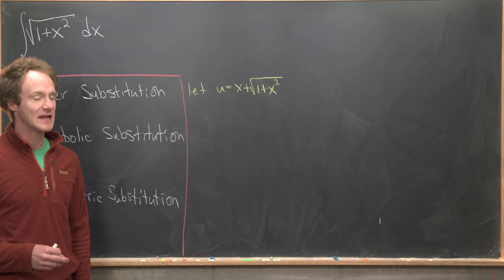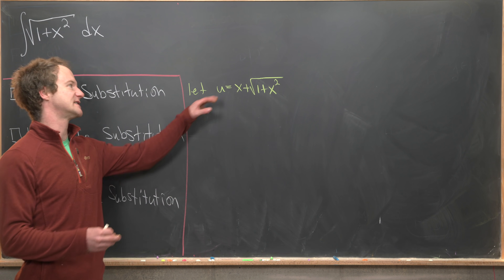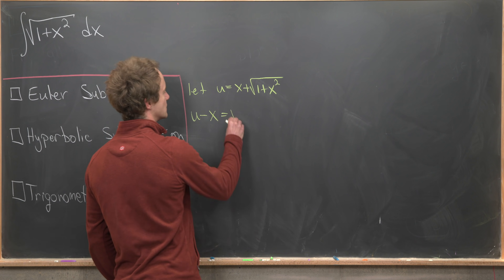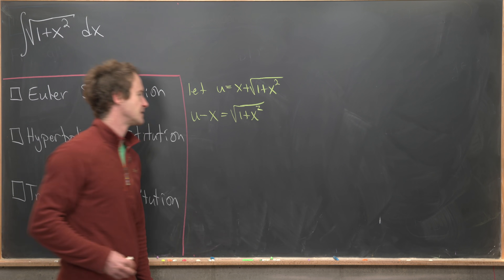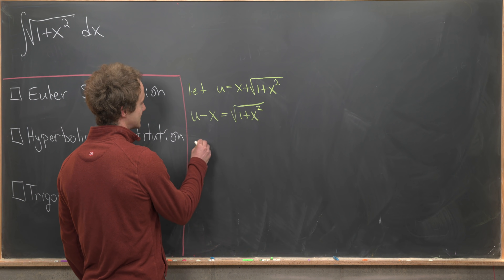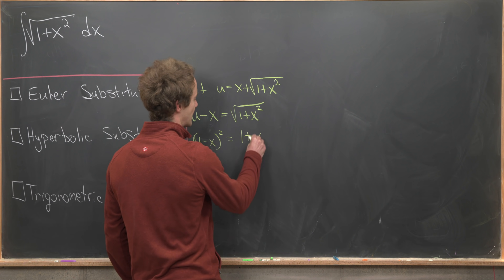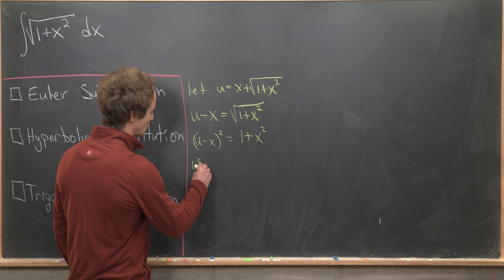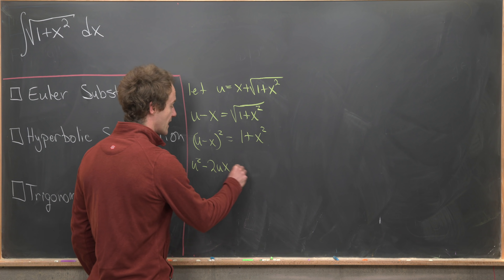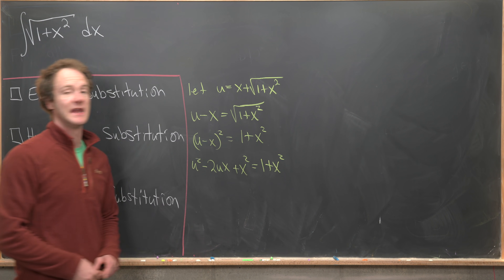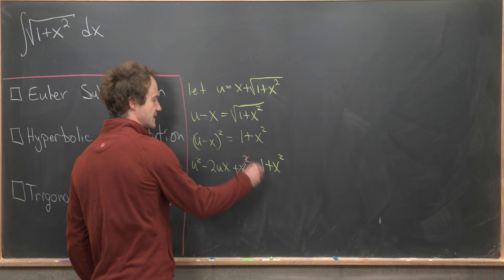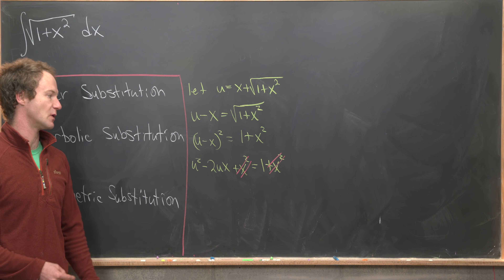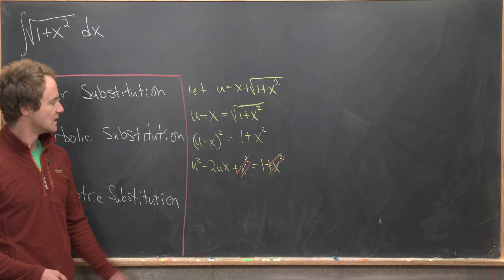That might seem a little cheaty, and I will admit that it kind of is, but needless to say this substitution is pretty nice. Notice that it tells us that u minus x equals the square root of 1 plus x squared. We can square both sides: u minus x quantity squared equals 1 plus x squared. Multiplying out the left side gives u squared minus 2ux plus x squared equals 1 plus x squared. We can cancel the x squared terms and solve for x.